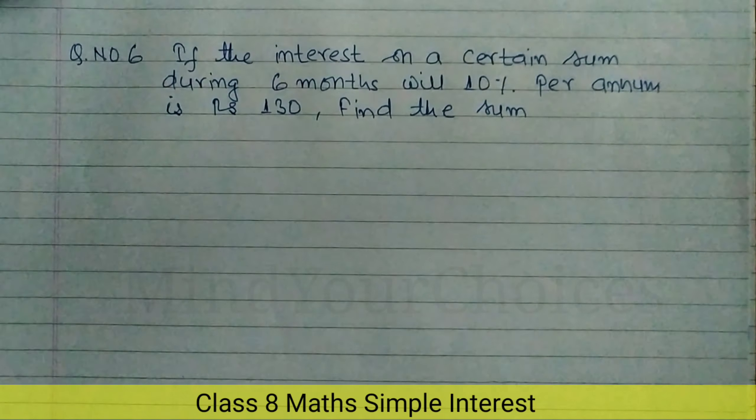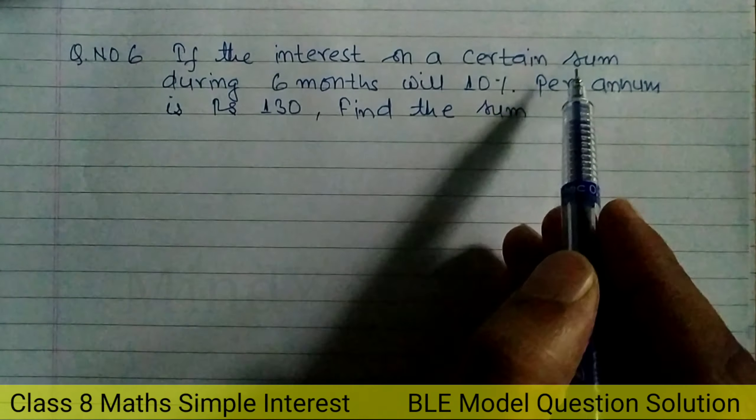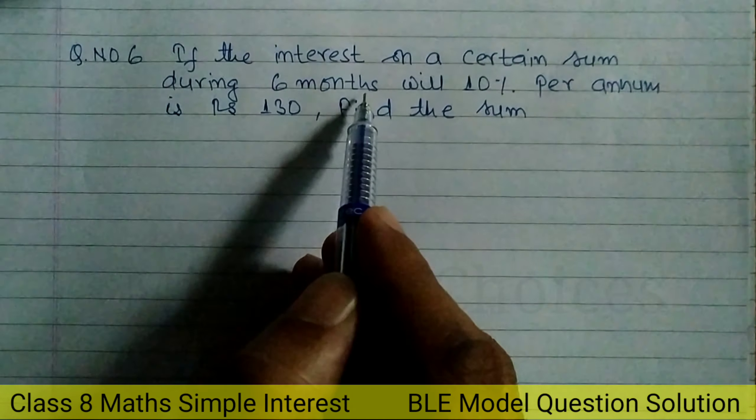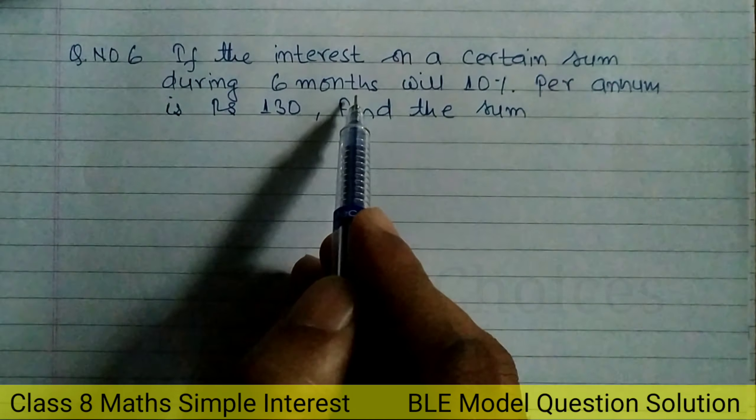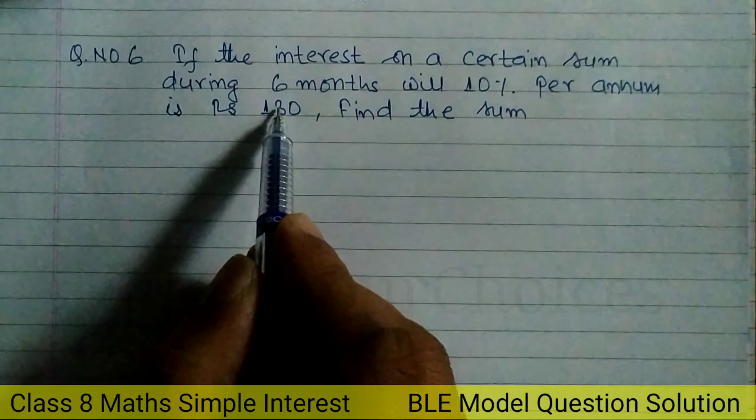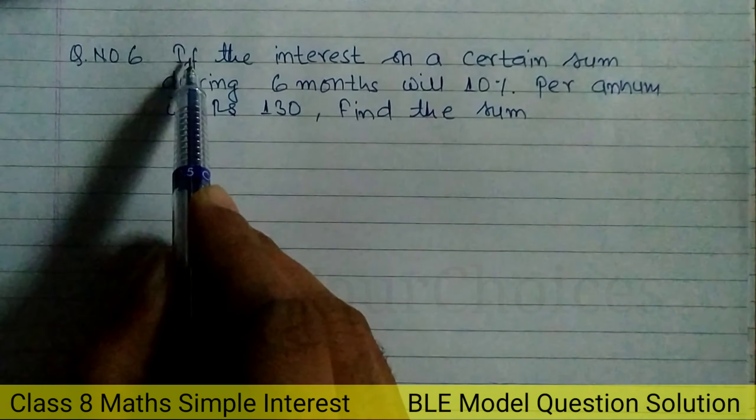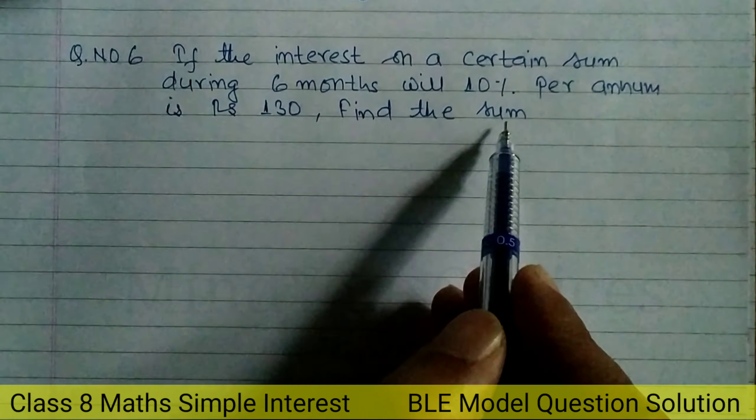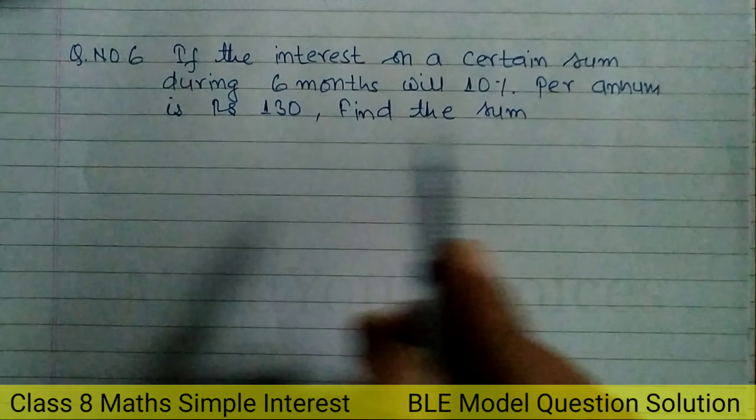Question No. 6: If the interest on a certain sum during 6 months is 10% per annum, we will convert. The interest is Rs. 130. We will find out the sum. Sum is the principal.